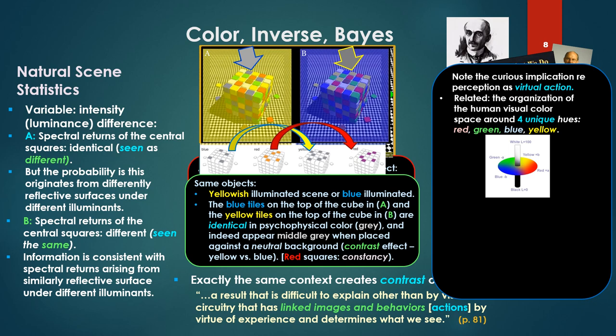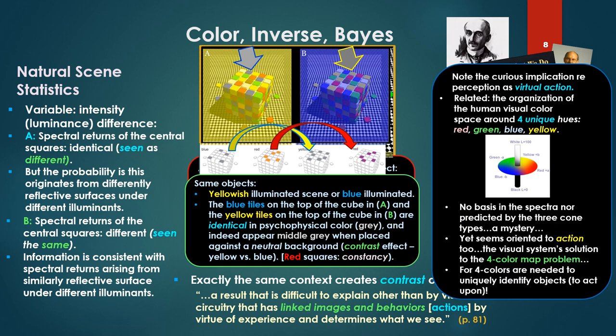And as Purvis and Lotto say, this is a result that is difficult to explain other than by visual circuitry that is linked images and behaviors, that is action. They're arguing that the perception is actually created by successful actions relative to different objects in different colors and experience. So by virtue of experience it determines what we see. Interestingly, they just note the curious implication, Bergson's perception as virtual action here, because basically they're saying you're even seeing color with respect to the capability of action or how one can act.